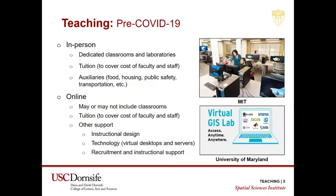In the online world, up to now, we may or may not have needed classrooms. We still charge tuition to cover the cost of faculty and staff, but experience has taught us that we need other support — in many cases, instructional design and technology. The picture at the bottom is the interface to the University of Maryland's virtual GIS lab, which is something all of us have probably been standing up for the last eight months. That requires, in our case, virtual desktops and servers, and in many online programs, a separate staff to help with recruitment and instructional support.